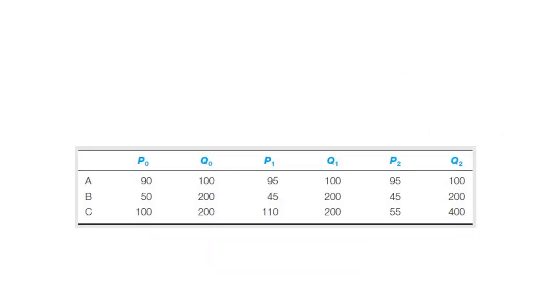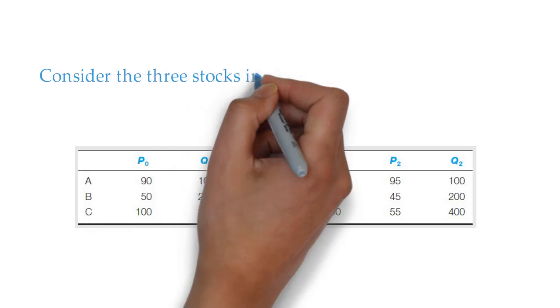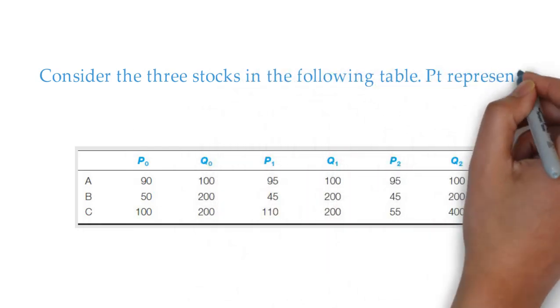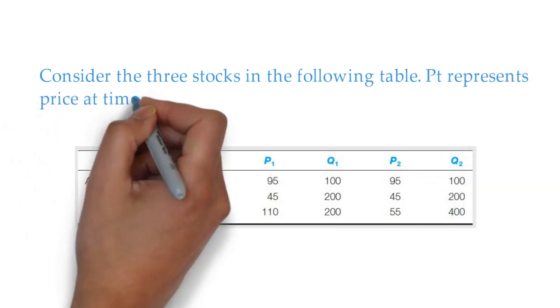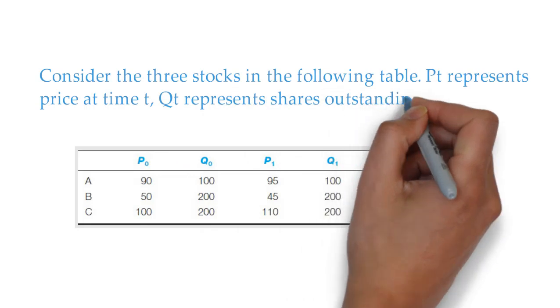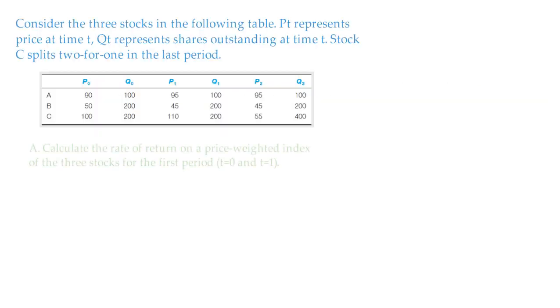Consider the three stocks in the following table. P sub T represents price at time T. Q sub T represents shares outstanding at time T. Stock C splits two for one in the last period, as indicated in the last row. Now the question. First question. Calculate the rate of return on a price-weighted index of the three stocks for the first period, which is T equals 0 and T equals 1.